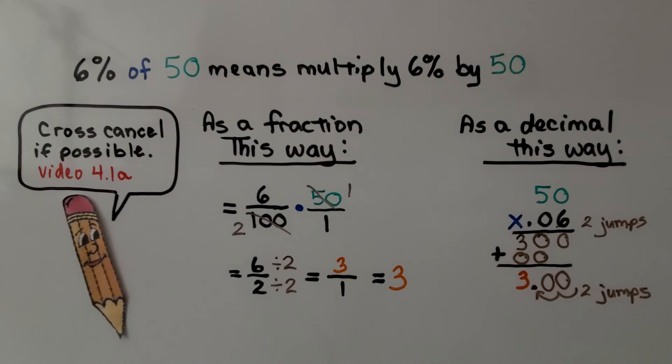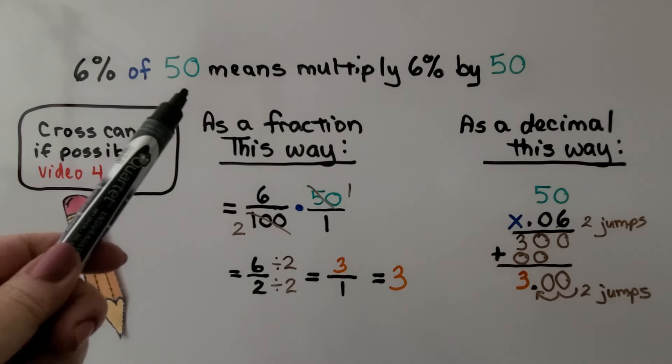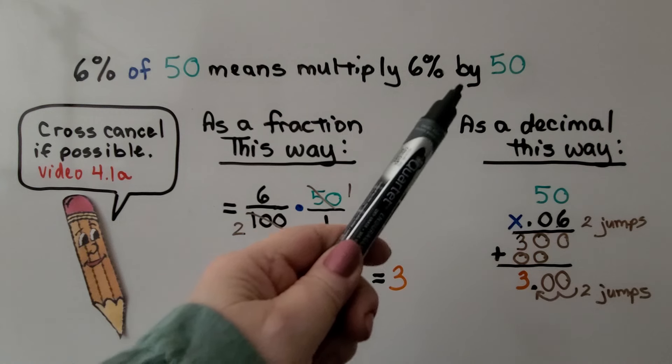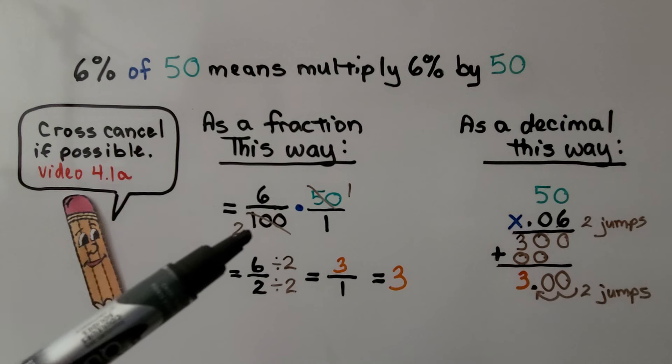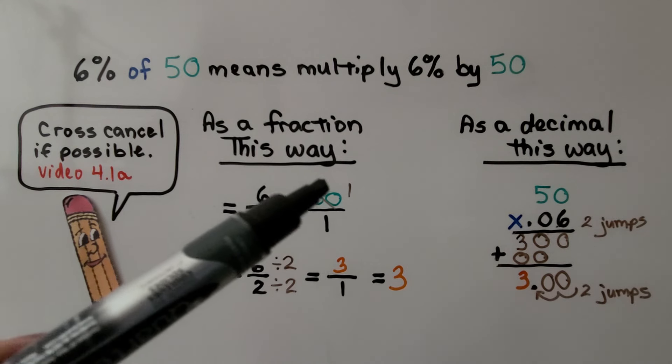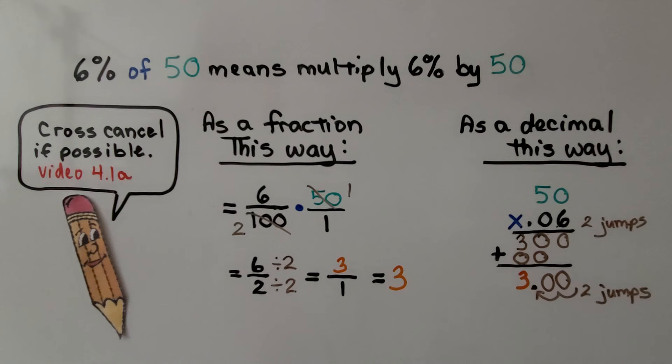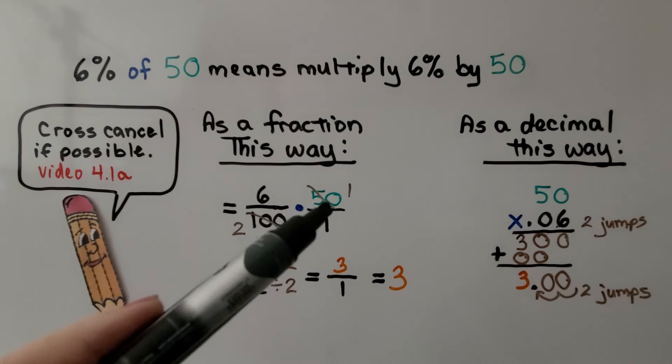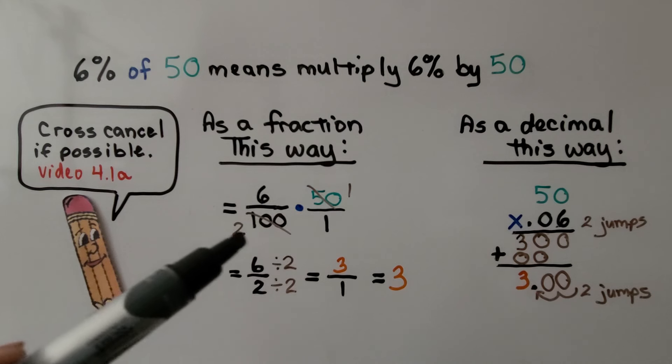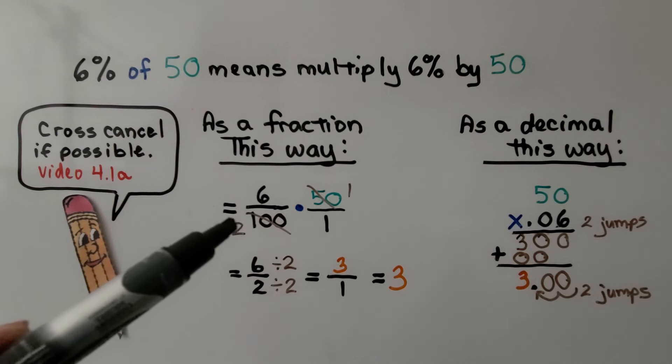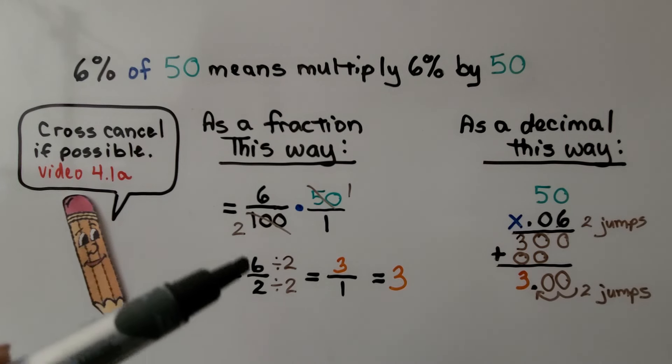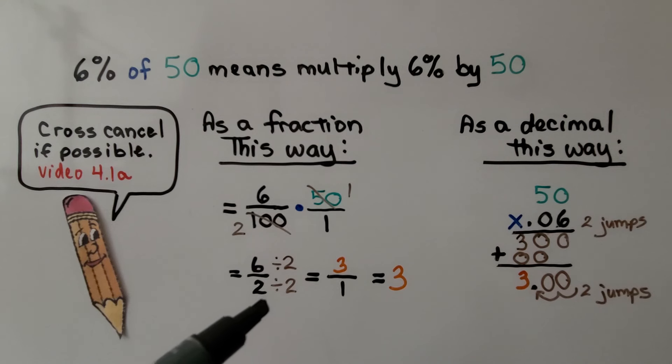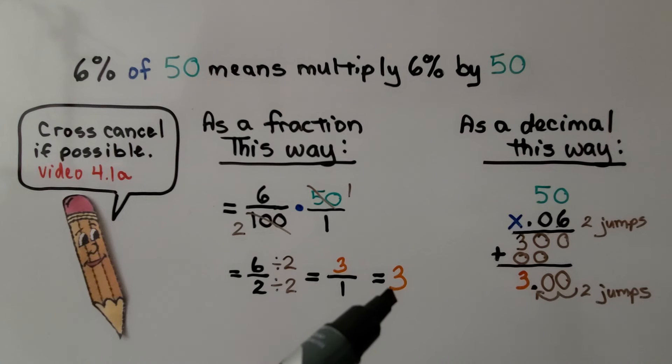Another example for those of you who need it, we have 6% of 50. That means multiply 6% by 50, and we can write 6% as 6 over 100, and we're going to multiply it by 50 over 1, and we can use cross-canceling. We have a 50 here. We cross it off and say there's one 50 here and there's two 50s here, and we make that a 2. Now we're doing 6 times 1 over 2 times 1. We get 6 halves, and we can simplify this by dividing the numerator and denominator by 2, and we find the missing part is 3.